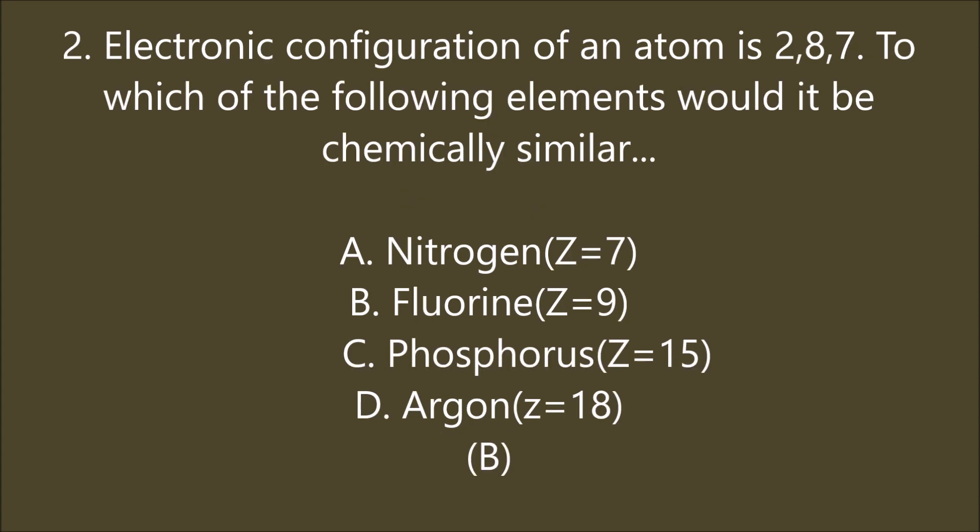Electronic configuration of an atom is 2,8,7. To which of the following elements would it be chemically similar? Nitrogen (Z=7), Fluorine (Z=9), Phosphorus (Z=15), Argon (Z=18). B is the right answer. Electronic configuration of Nitrogen is 2,5; Fluorine is 2,7; Phosphorus is 2,8,5; Argon is 2,8,8. Fluorine contains 7 valence electrons, as does the given atom. So these are chemically similar. The given atom is Chlorine. B is the right answer.